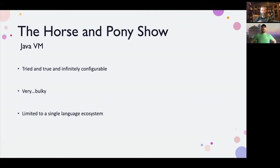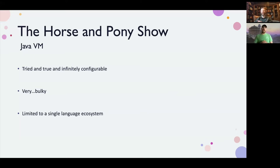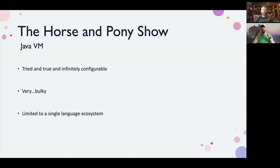First off is our horse and pony show — a little comparison. When people talk about WASM they always ask, haven't we tried that before? Yes, everything reinvents itself every ten years. Starting with the Java VM: it's very tried and true and infinitely tweakable, but it is very bulky — takes a lot of resources — and it's limited to a single language ecosystem. It's also a leaky abstraction in that Java libraries encompass everything from files and networking with no real way for the host module to intercept what the guest module requests. WebAssembly provided some of that isolation for free right out of the box without Java's bulkiness.